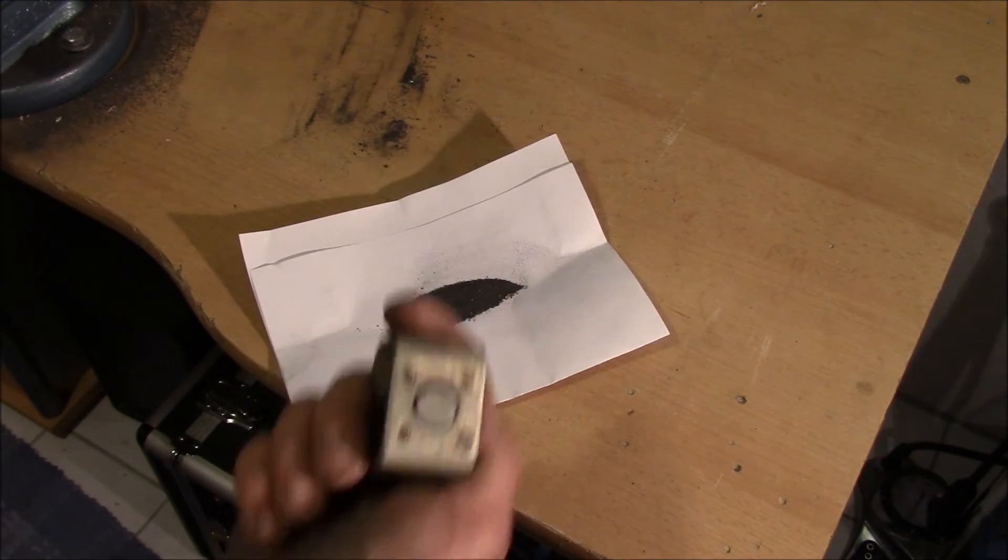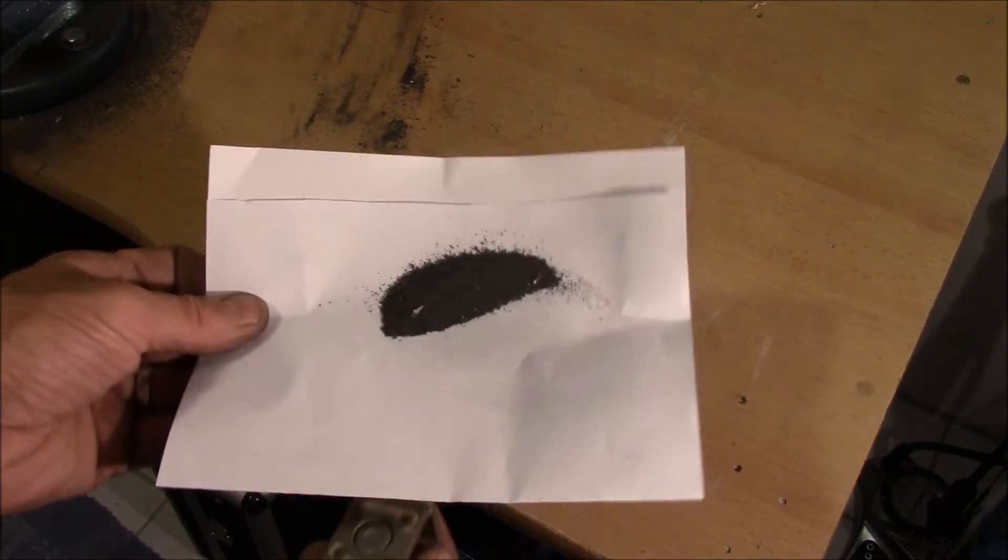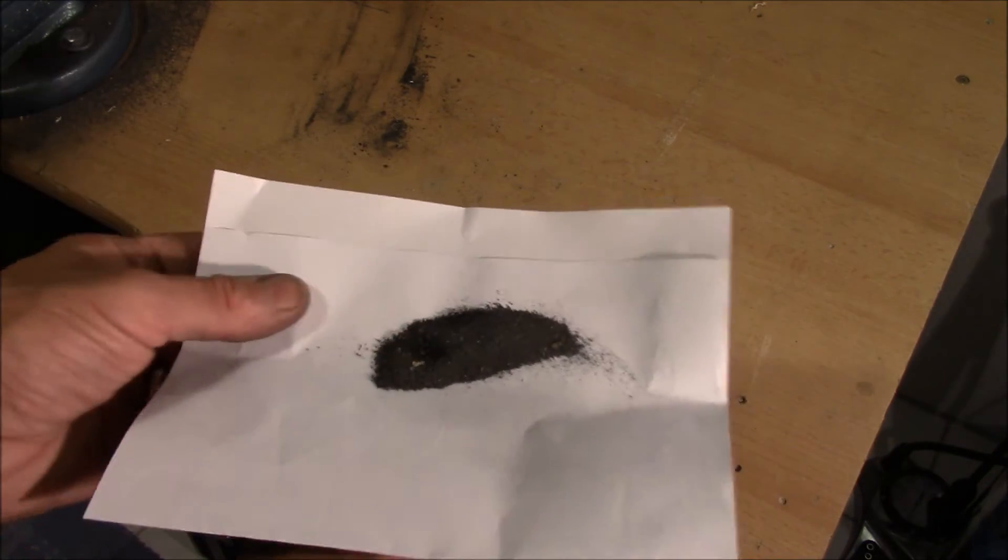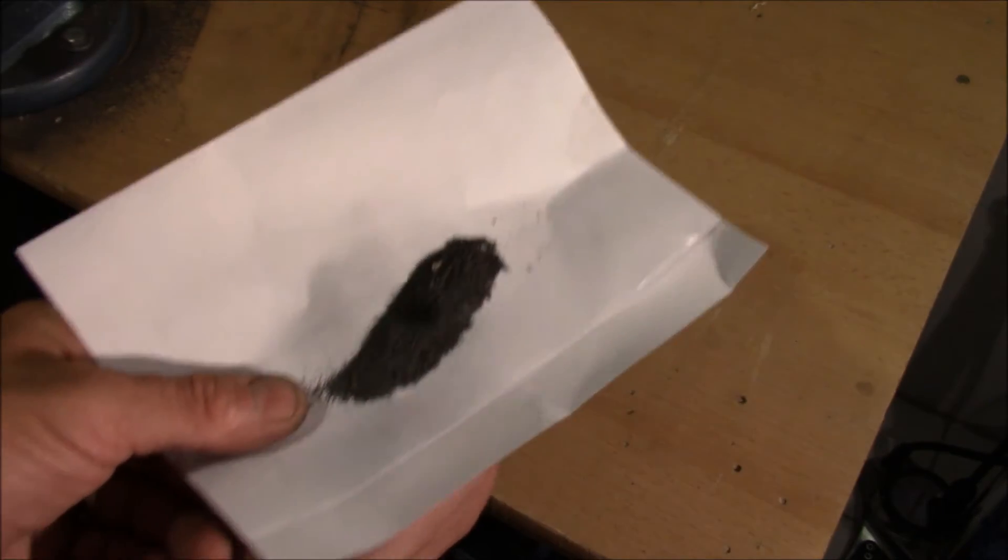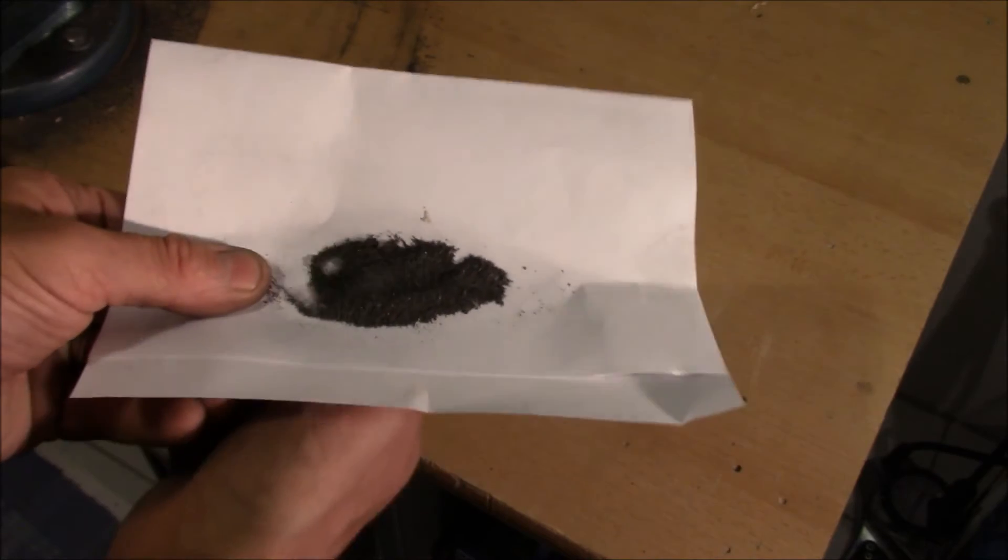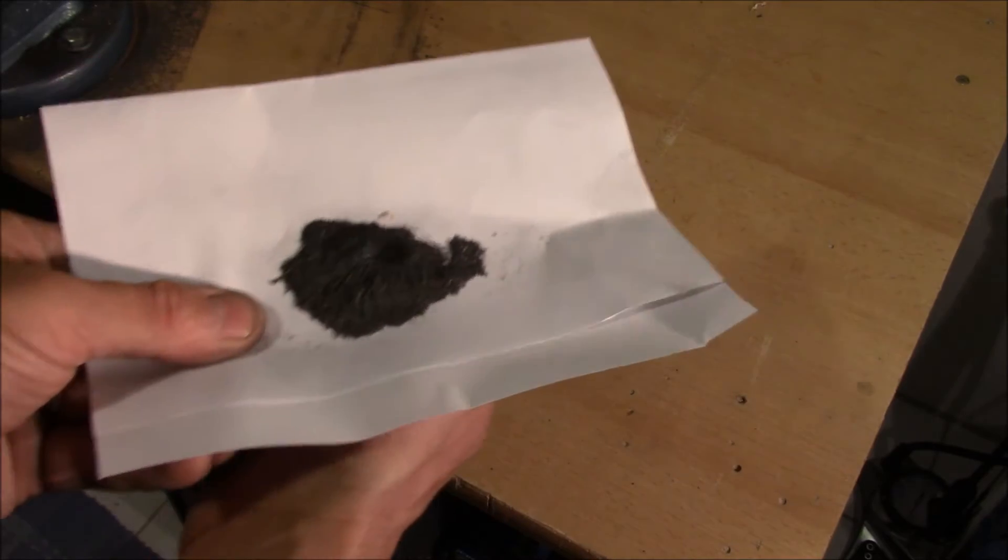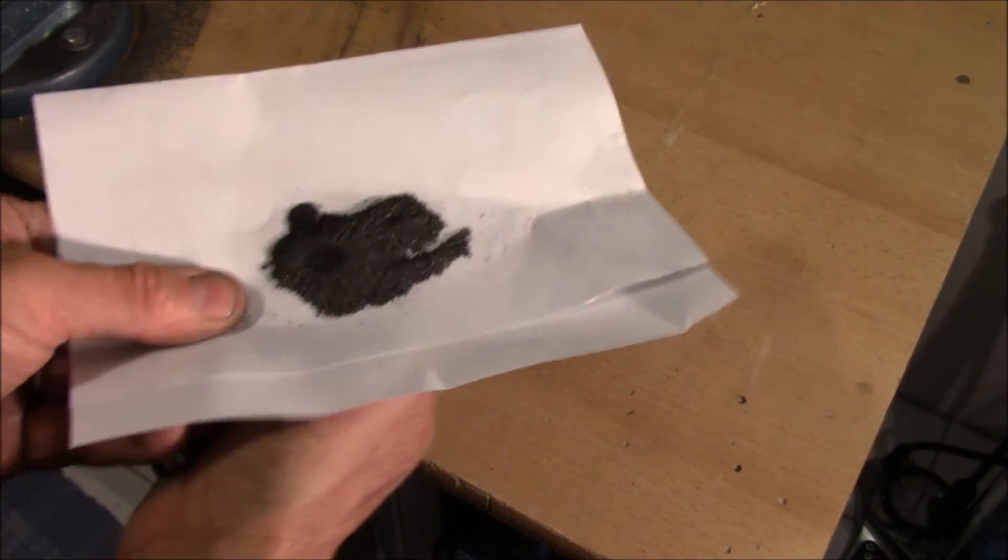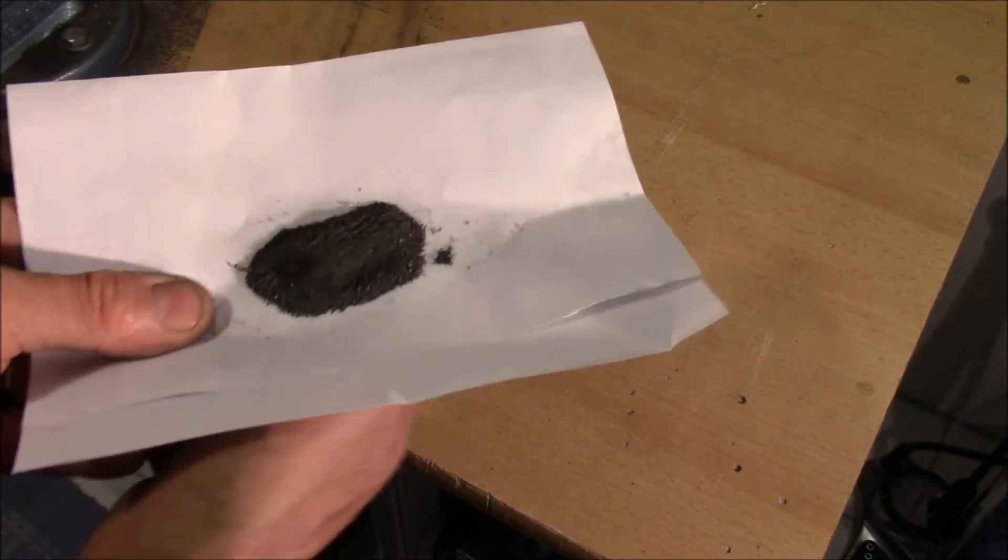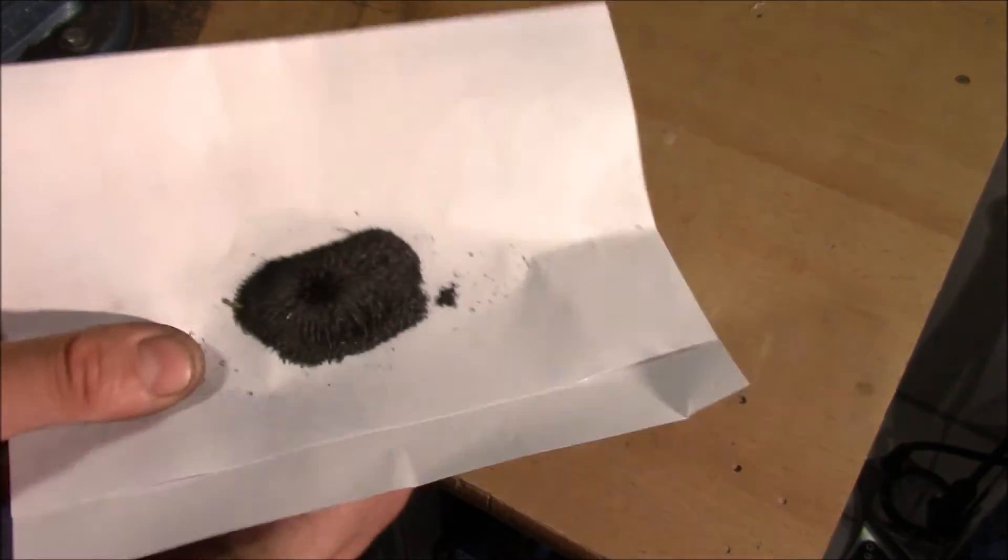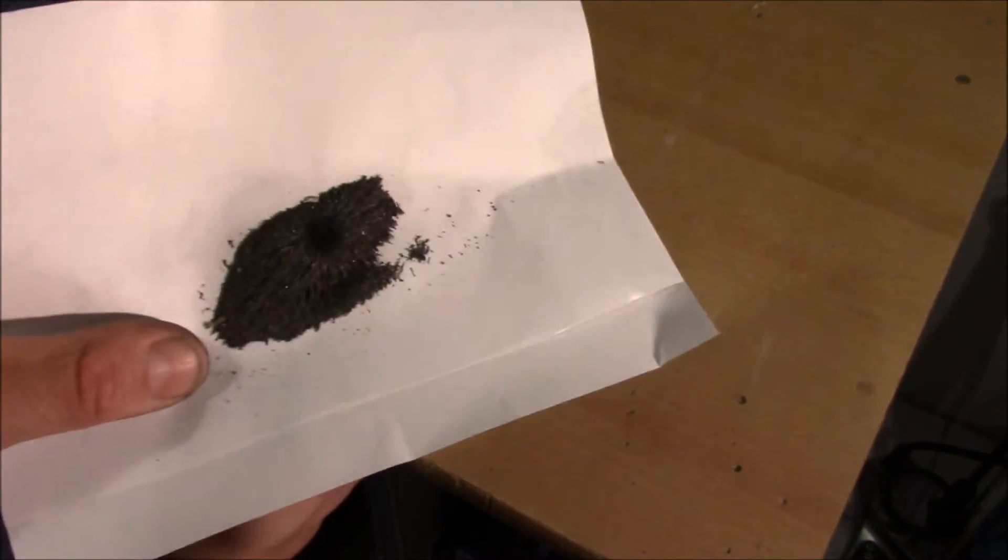One is that it's ferromagnetic. Here I have a magnet. Here I have a little bit of dust. Let's see how that looks like. It's very obvious that this material, this type of metal is ferromagnetic. The other property is that it has a melting point of, I think, 419 degrees Celsius.